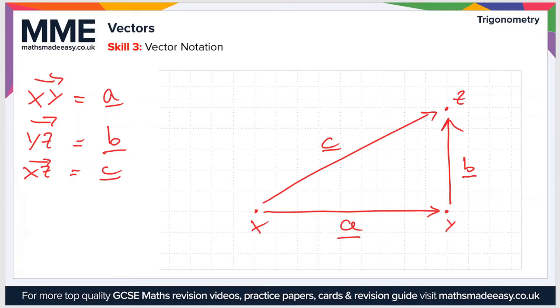Let's say we wanted to have a vector running from Z to X, rather than X to Z. We write that as ZX. As you can see, that runs in the opposite direction to the line C, or the vector C. We can say that it is equal to minus C, because it's in the opposite direction and it's the same size.